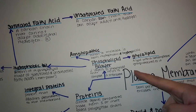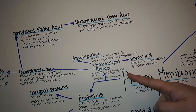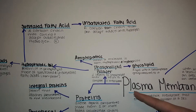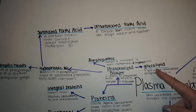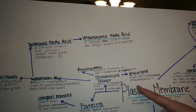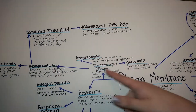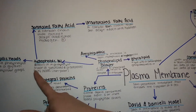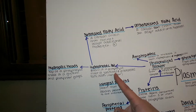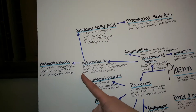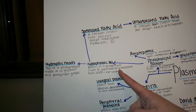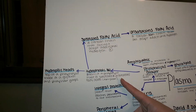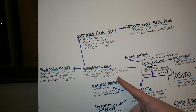Moving back up from proteins, we go to the phospholipid bilayer, which is two layers of phospholipids that help to contain and compose a membrane. The phospholipid bilayer is made up of glycolipids, which are lipids with carbohydrates attached. The phospholipid bilayer is also made up of a hydrophilic head and a hydrophobic tail. The hydrophilic head is the top of the phospholipid bilayer, made of glycerol and phosphate groups. The hydrophobic tail is the bottom, made of saturated and unsaturated fatty acids, and is non-polar.